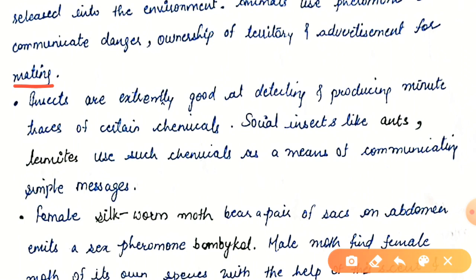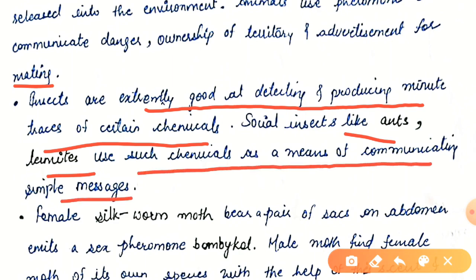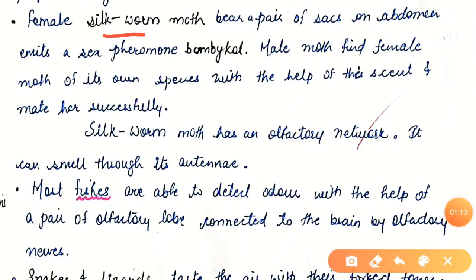Insects are extremely good at detecting and producing minute traces of certain chemicals, especially pheromones. I have already uploaded a video on pheromones — you can check it at Mind Spine Tutorials. Social insects like ants and termites use such chemicals as a means of communicating simple messages — they just release these pheromones for communication purposes.